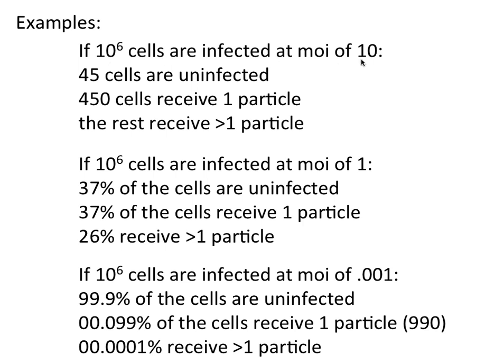In practice, if you infect a million cells with an MOI of 10, you determine that only 45 cells are uninfected, 450 cells receive one particle, and the rest get more than one. So at an MOI of 10, essentially all of your cells are infected. That's why if you want to synchronize infection in a culture, you use a high MOI of 10 — or at least 5 — to ensure all cells are infected.